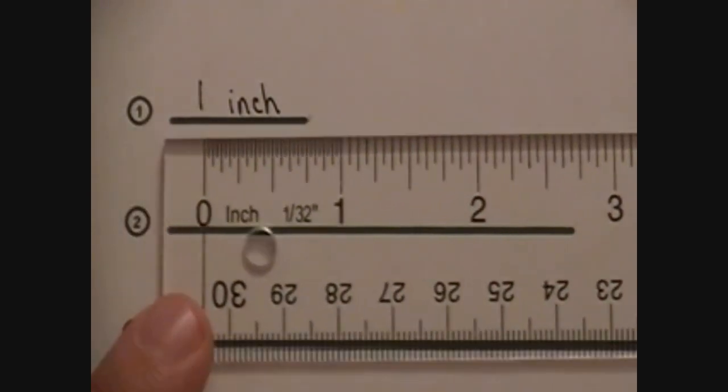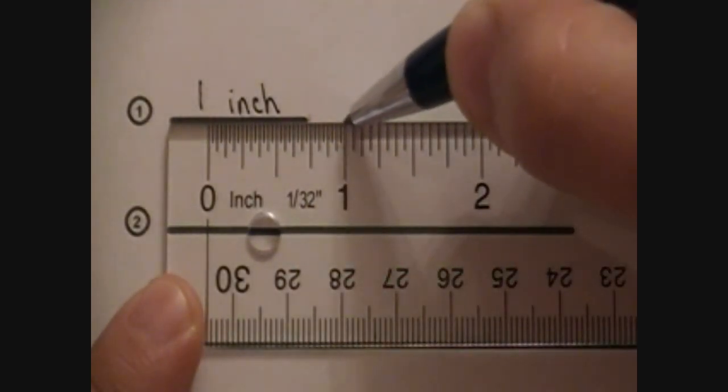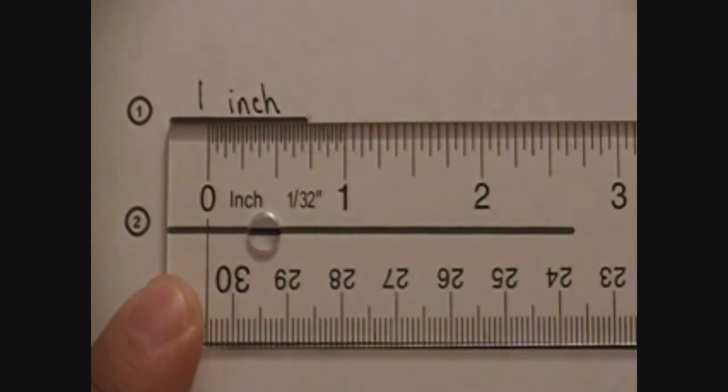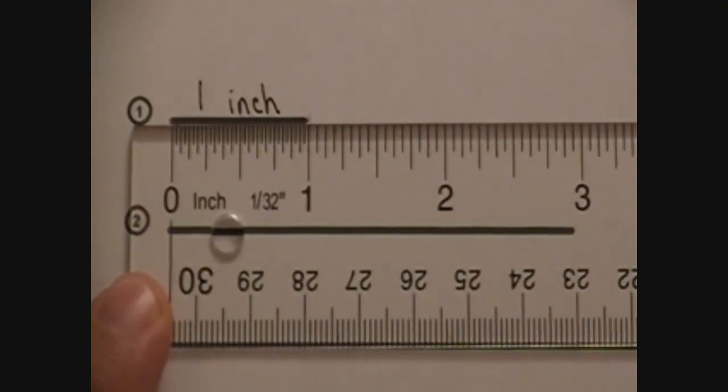Now if you measured with the empty spot in the beginning, you see that the 1 is over here. And if that's where you measured, you're not going to have a 1 inch line segment. It's shorter than 1 inch. So you can see how crucial it is that you start with the 0 at the beginning.